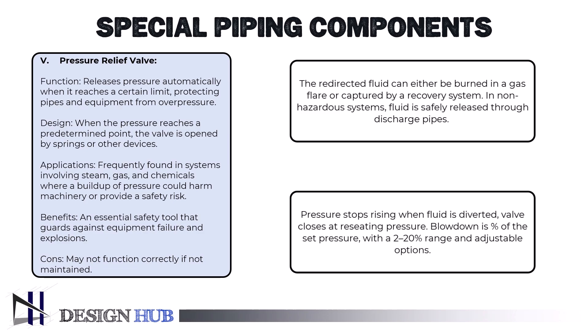The pressure inside the vessel will cease to rise as soon as the fluid is redirected. The valve will close when the pressure inside it reaches the receding point. The blowdown, which measures the amount of pressure that must drop before the valve recedes, is often expressed as a percentage of the set pressure. There is a 2–20% range in the blowdown, and certain valves have adjustable blowdowns.